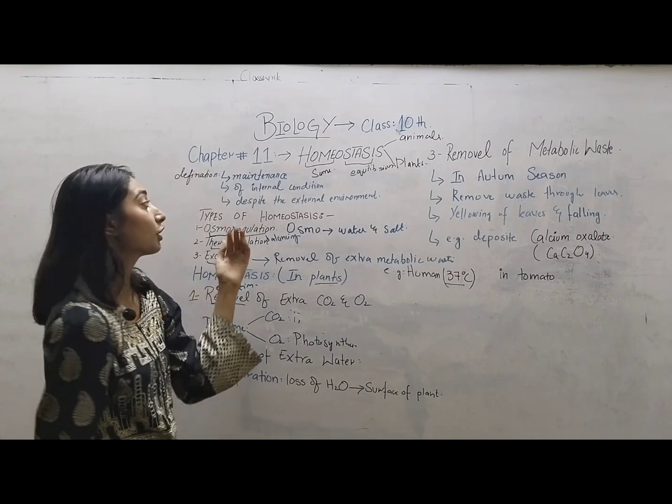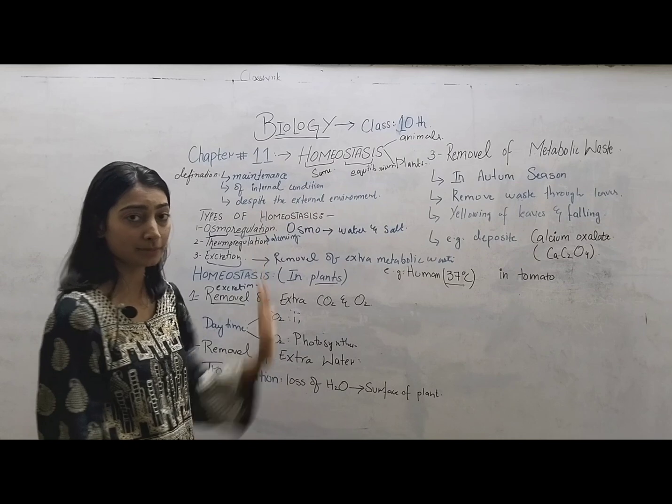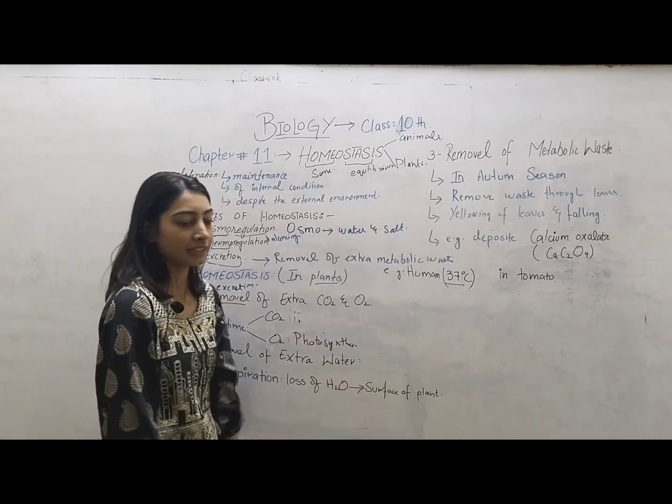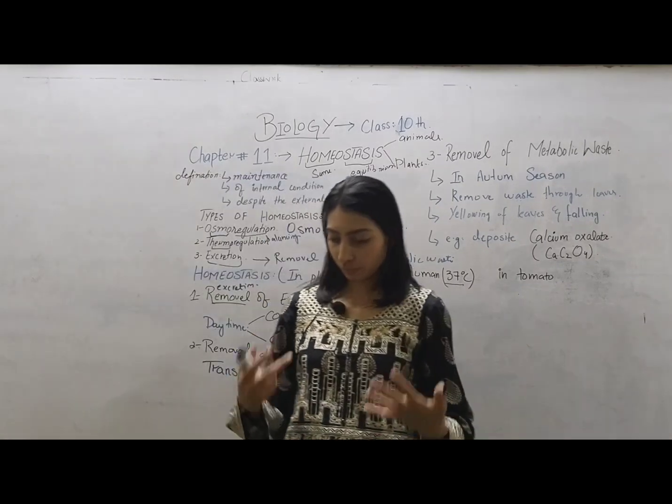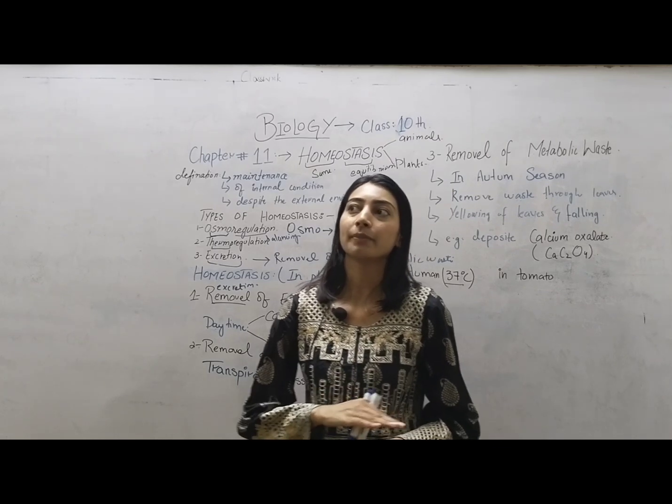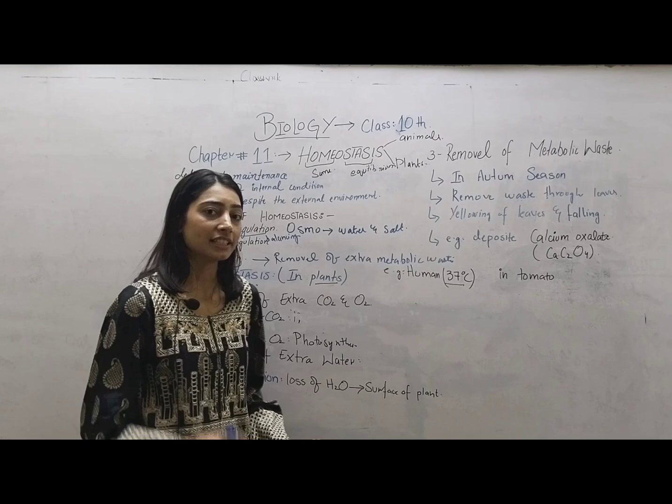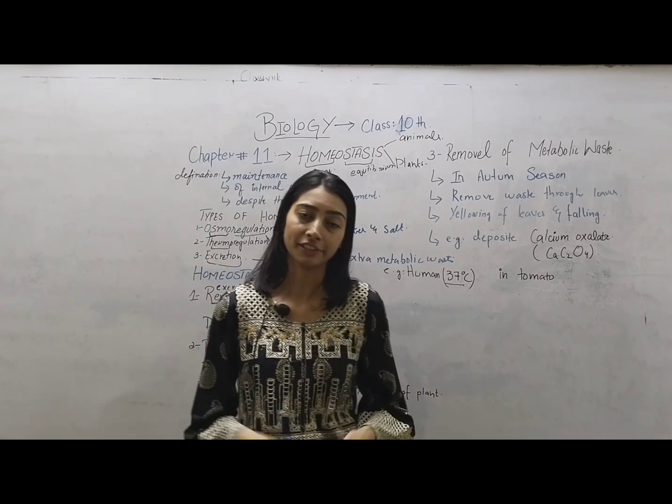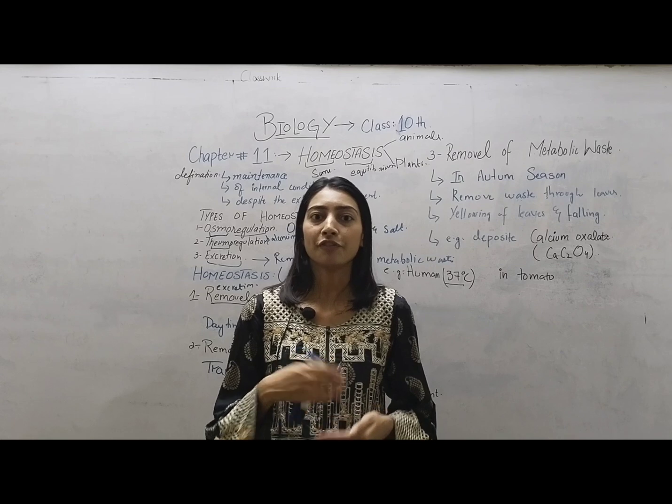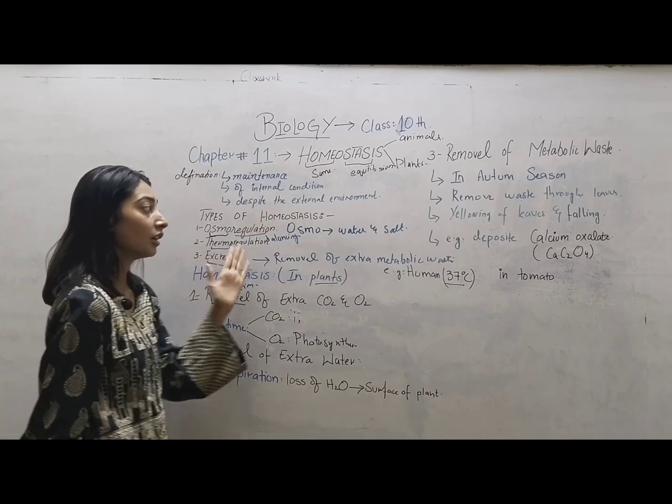The definition of homeostasis is the maintenance of equilibrium of internal conditions despite the external environment. This means that even when the outside temperature changes, the internal body temperature remains the same. Types of homeostasis include osmoregulation - 'osmo' means water and salt, and regulation means balancing. The balancing of water and salt is called osmoregulation.